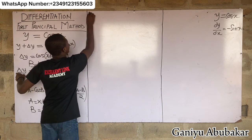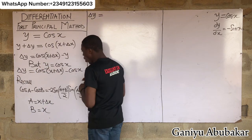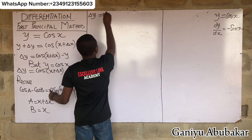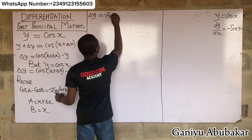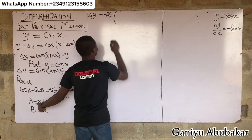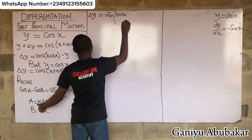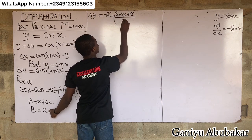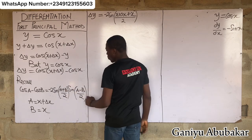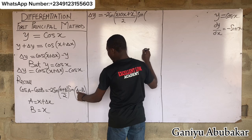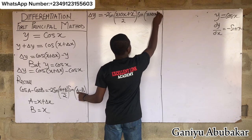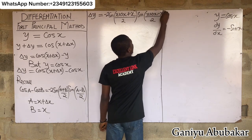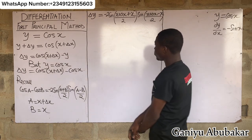Applying the identity, Δy equals minus 2 sin((x + Δx + x)/2) times sin((x + Δx - x)/2). That gives us minus 2 sin((2x + Δx)/2) times sin(Δx/2).